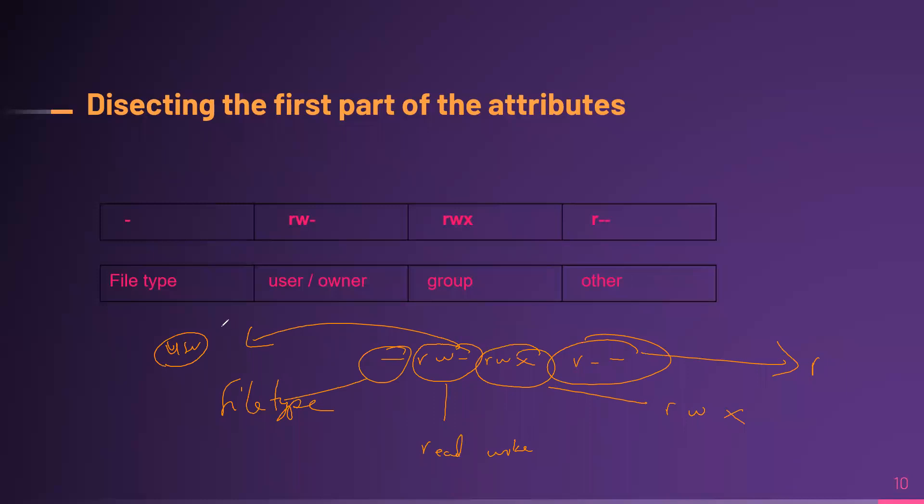So basically, this is what the particular file is doing. The file is allowing the user to only do read and write, but every other person that belongs to that group will do read, write, and execute. And then others, who are like system users and everything else, would be doing only read for this particular file.